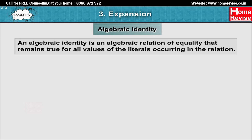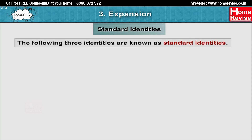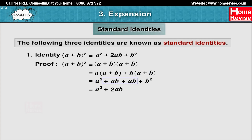Algebraic Identity: An algebraic identity is an algebraic relation of equality that remains true for all values of the literals occurring in the relation. For example, (x plus 1) into (x plus 2) equals x squared plus 3x plus 2 is an identity. Standard Identity 1: (a plus b) whole squared equals a squared plus 2ab plus b squared. Proof: (a plus b) squared equals (a plus b)(a plus b) equals a(a plus b) plus b(a plus b) equals a squared plus ab plus ab plus b squared equals a squared plus 2ab plus b squared.